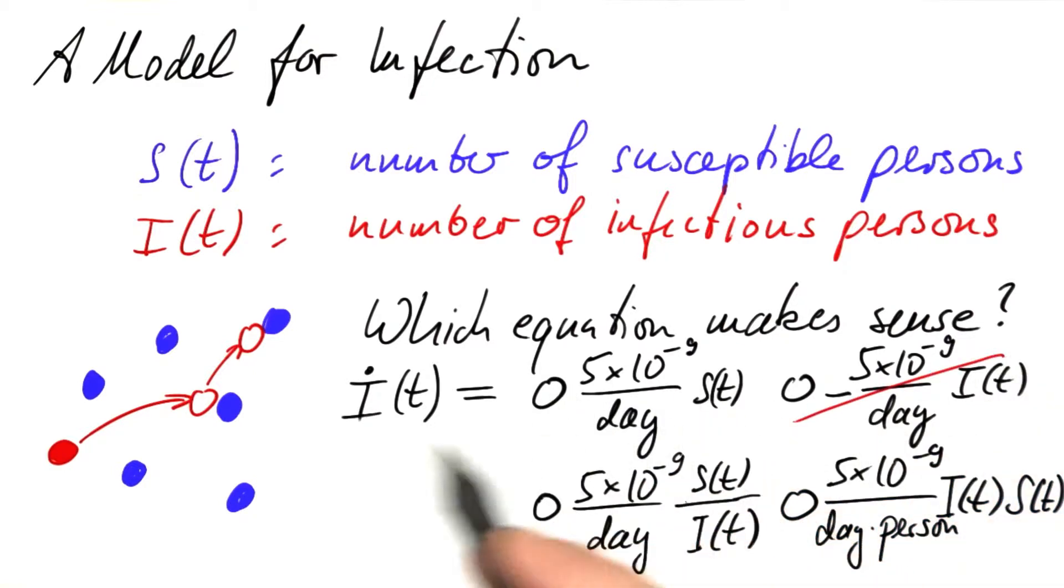With this answer, the rate of change would depend only on the number of susceptible persons. It would not matter to the rate of change of the number of infectious persons whether we started with one or ten or one million infectious persons.